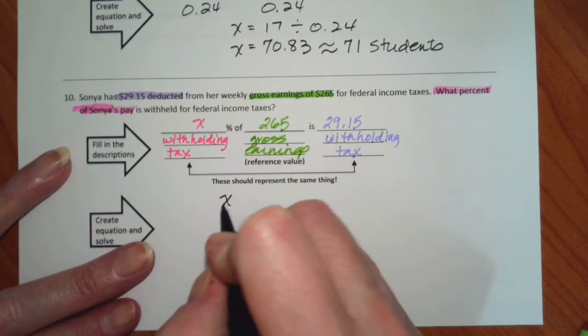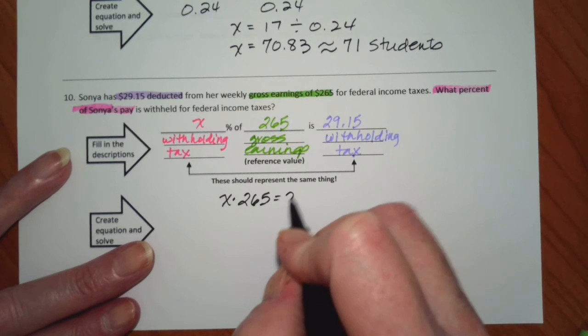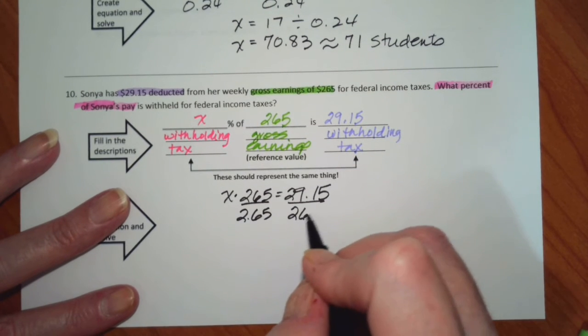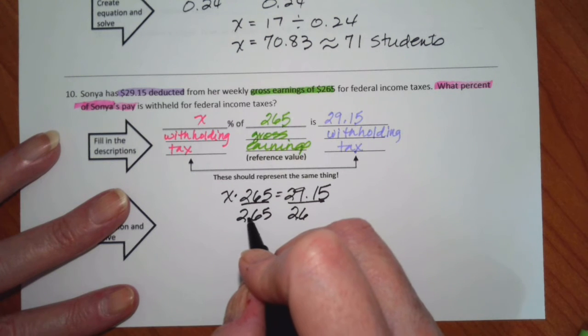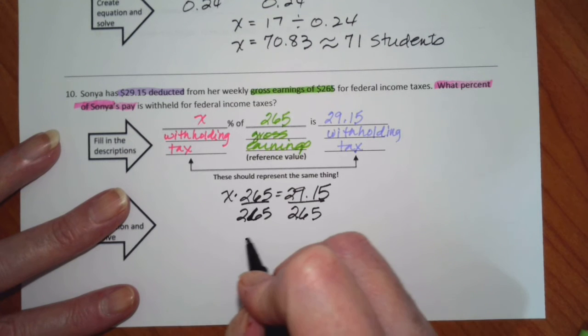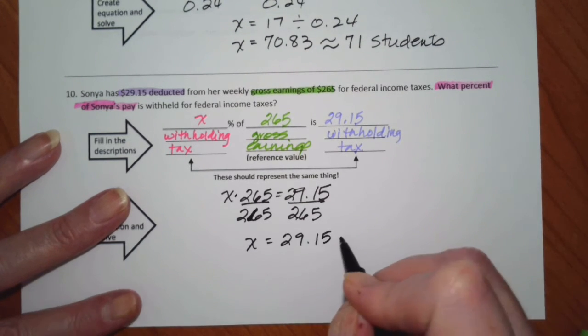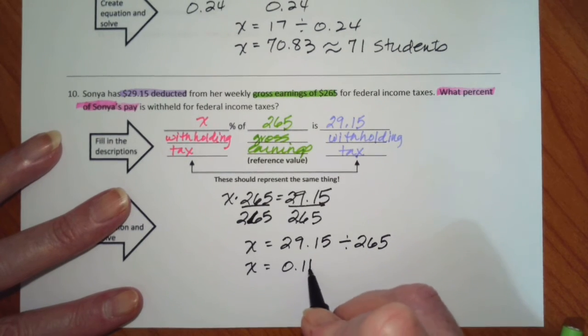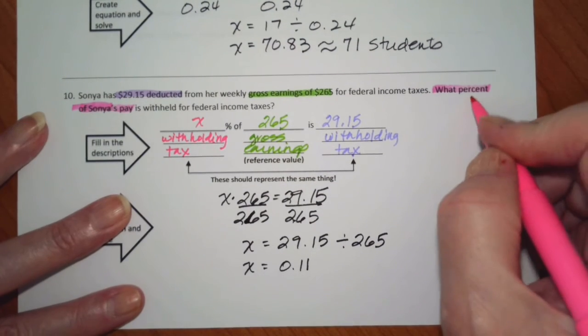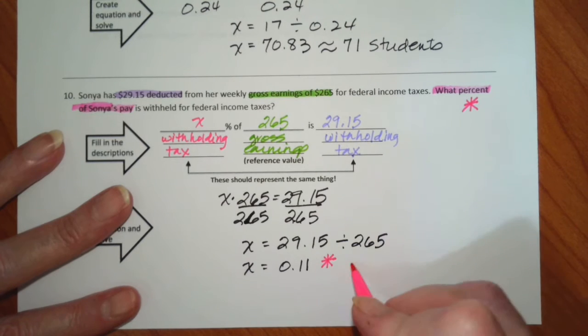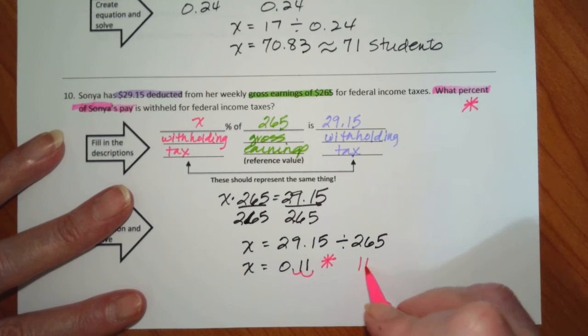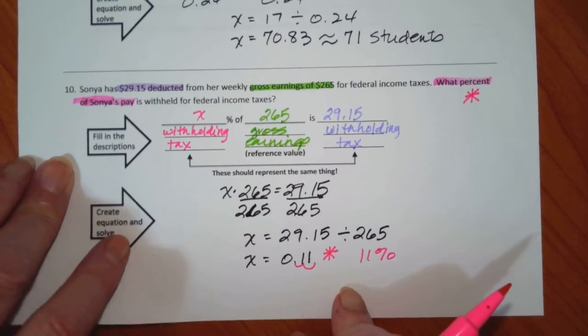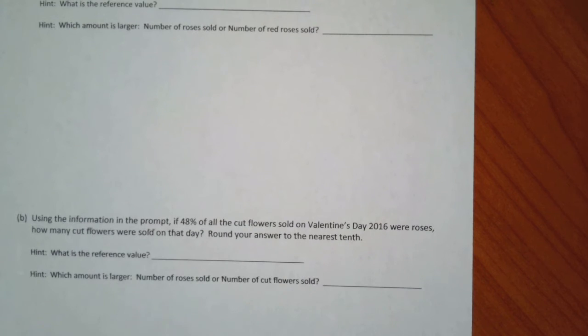If I set up my equation, this means x times 265 is equal to 29.15. If I divide both sides by 265, then x is equal to 29.15 divided by 265. So x is 0.11. But remember, they want to know what percent. So I move this two places to the right and this becomes 11% in withholding.